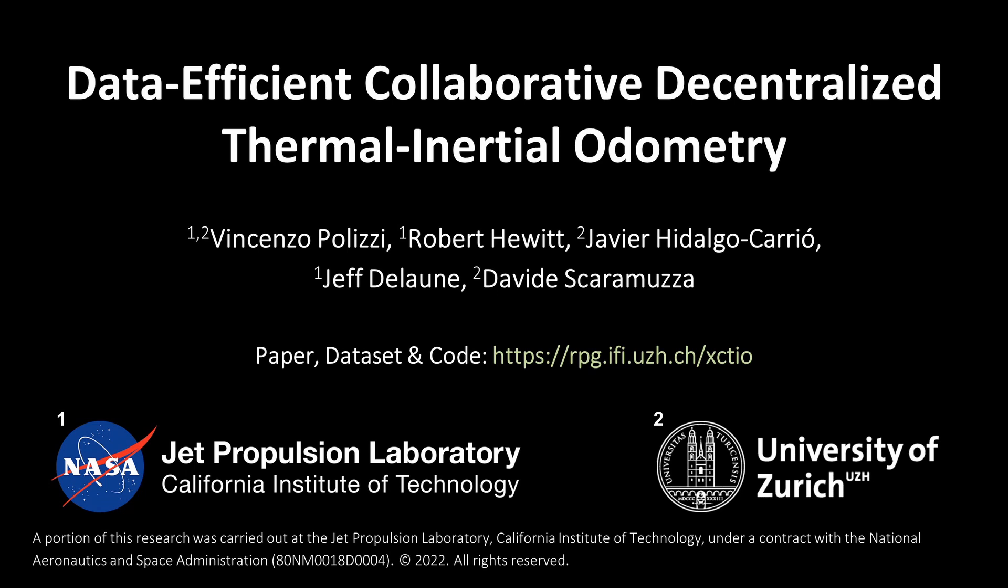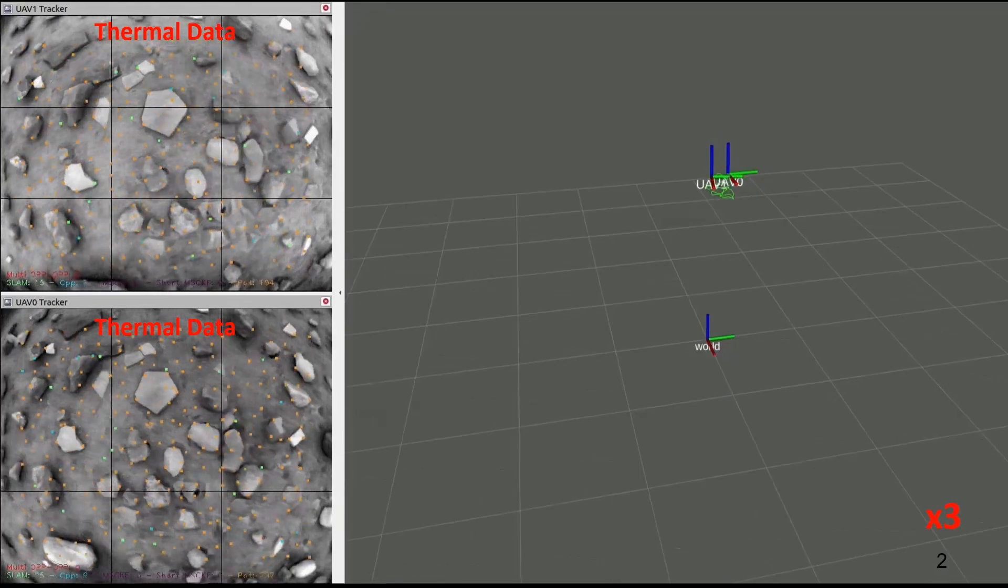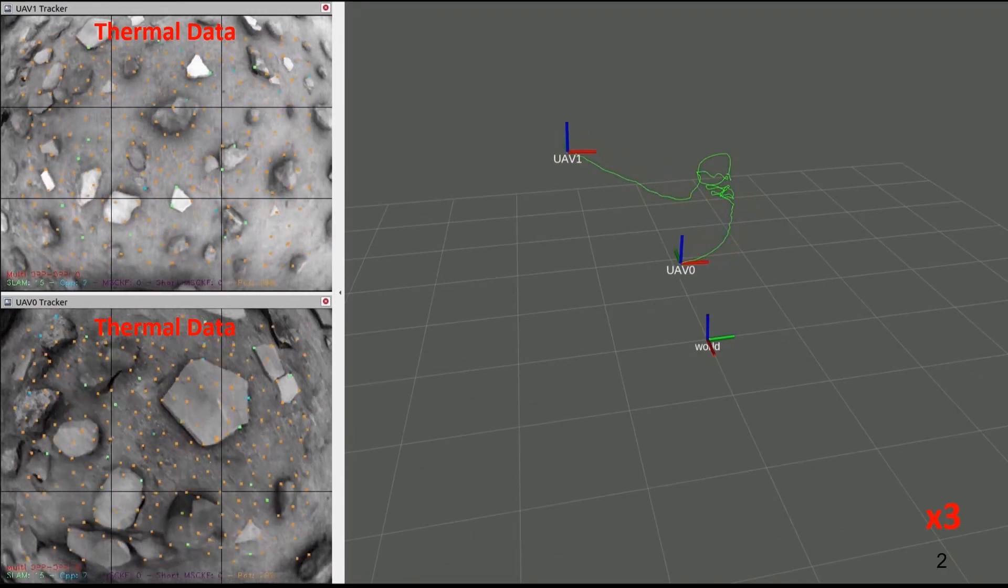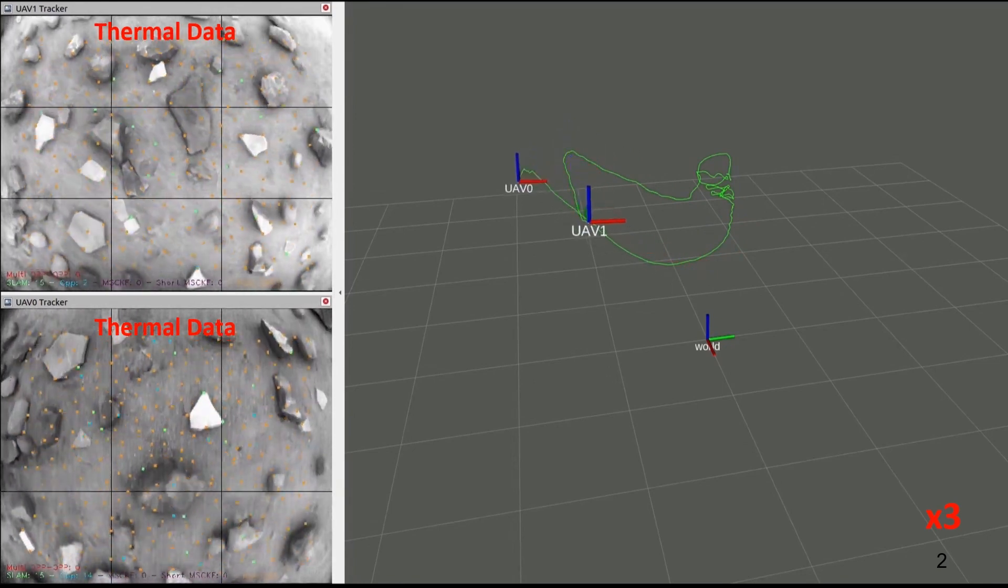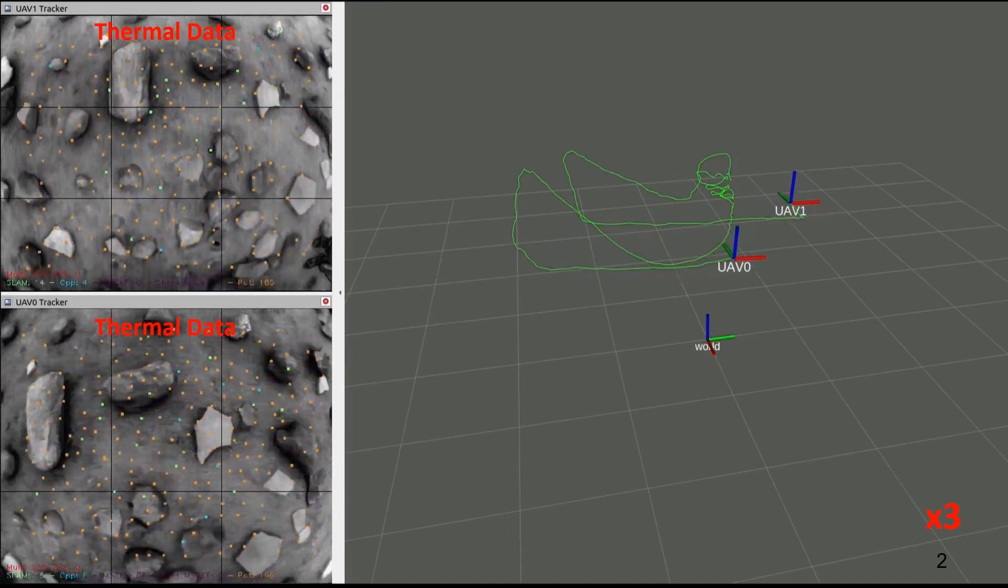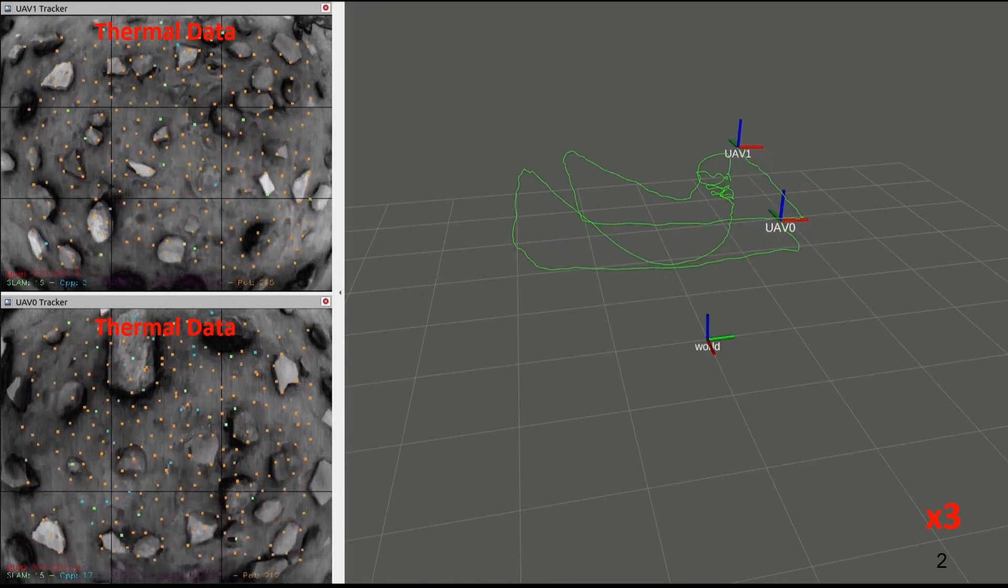We present the first data-efficient collaborative decentralized thermal inertial odometry system. This work extends the JPL XVAO, a state-of-the-art single-agent thermal inertial odometry framework. We made XVAO capable of exchanging information between different agents and fusing them together to improve their state estimate.